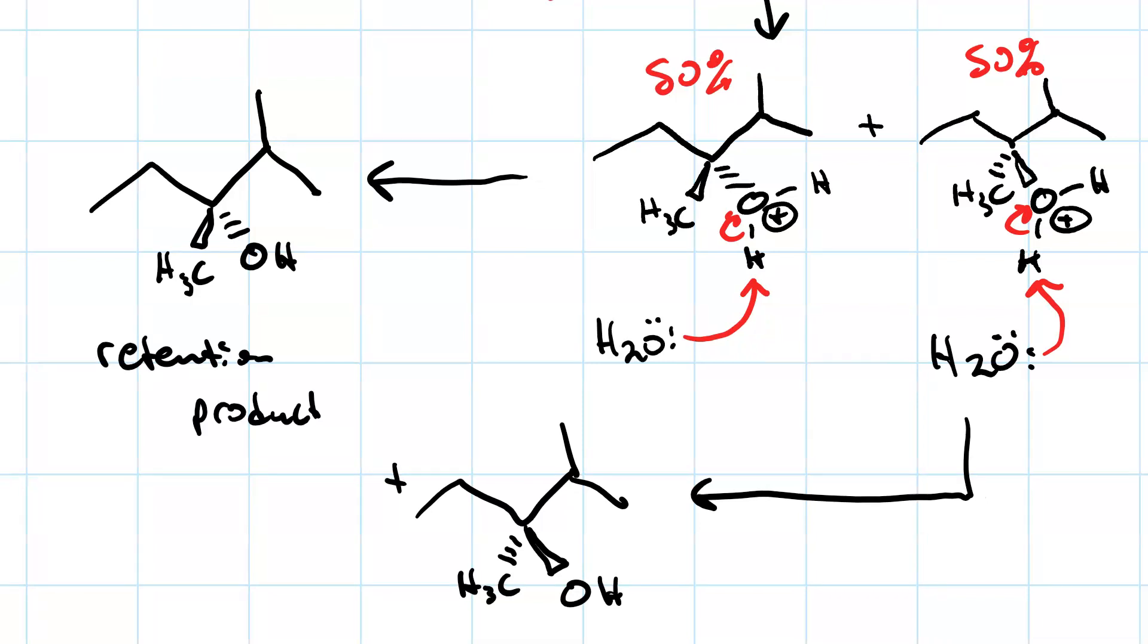Here we had first loss of a leaving group and second nucleophilic attack. This is the SN1 mechanism, and we get a racemic mixture of the retention product and the inversion product.